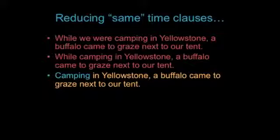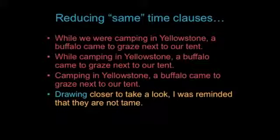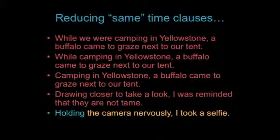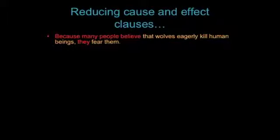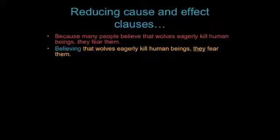Here are some other sentences with the meaning of 'while' with the same reductions. Cause and effect clauses show reasons for the main clause information to take place. Notice that the same rule applies: omit the adverbial clause subject — in this case 'people' — because it is consistent with the main clause 'they', which shows it is the same subject. Then the verb is changed to the -ing form.